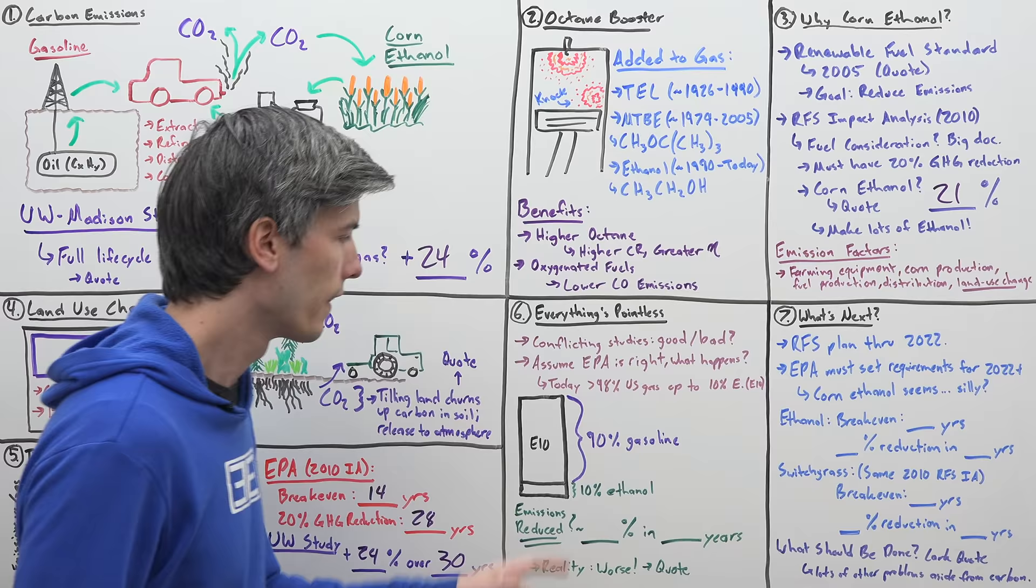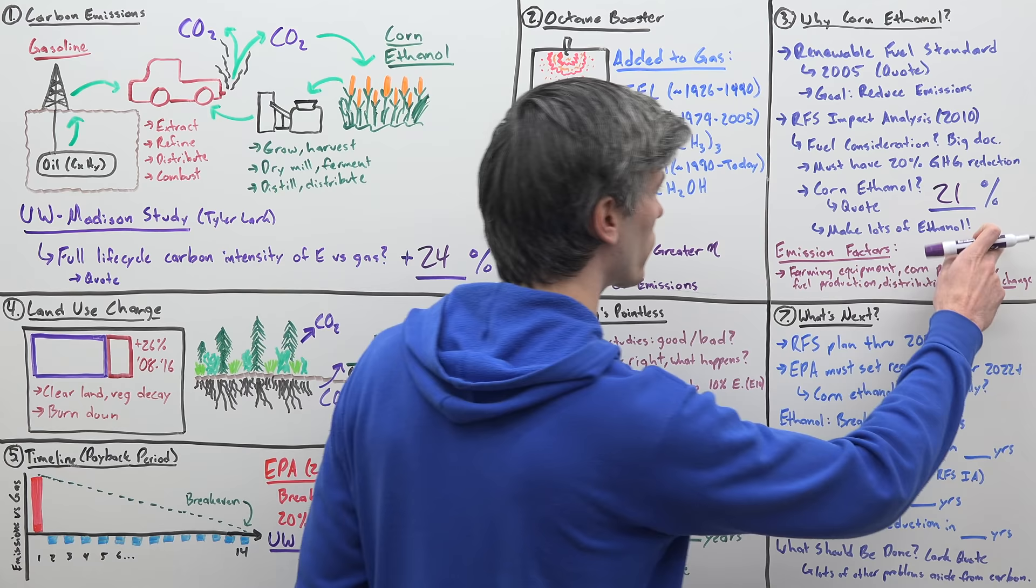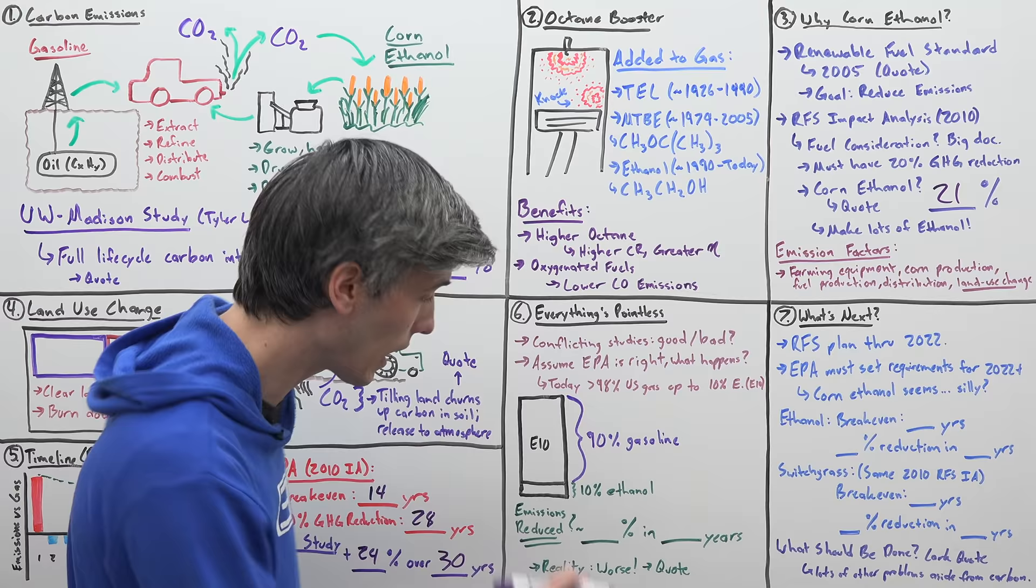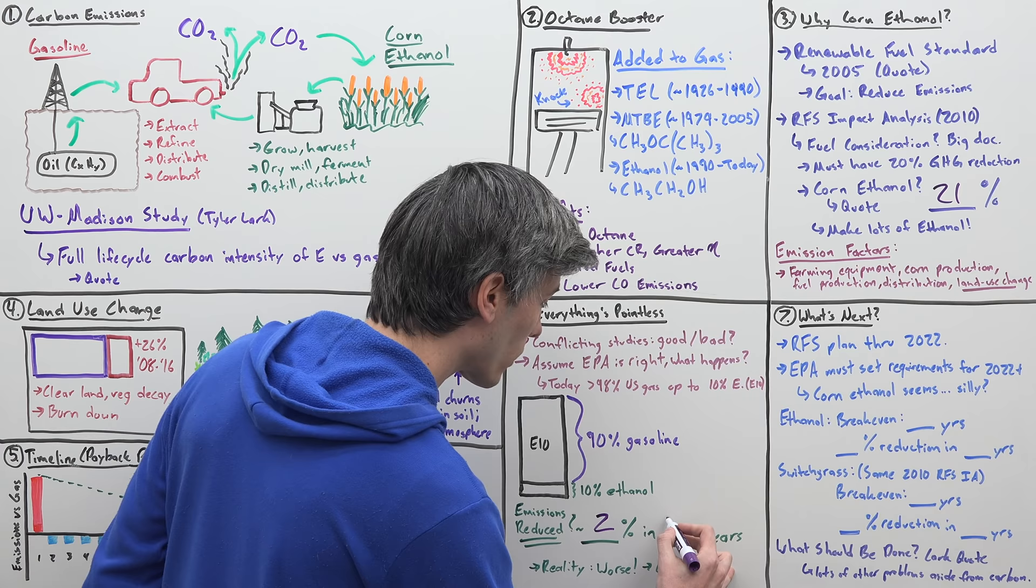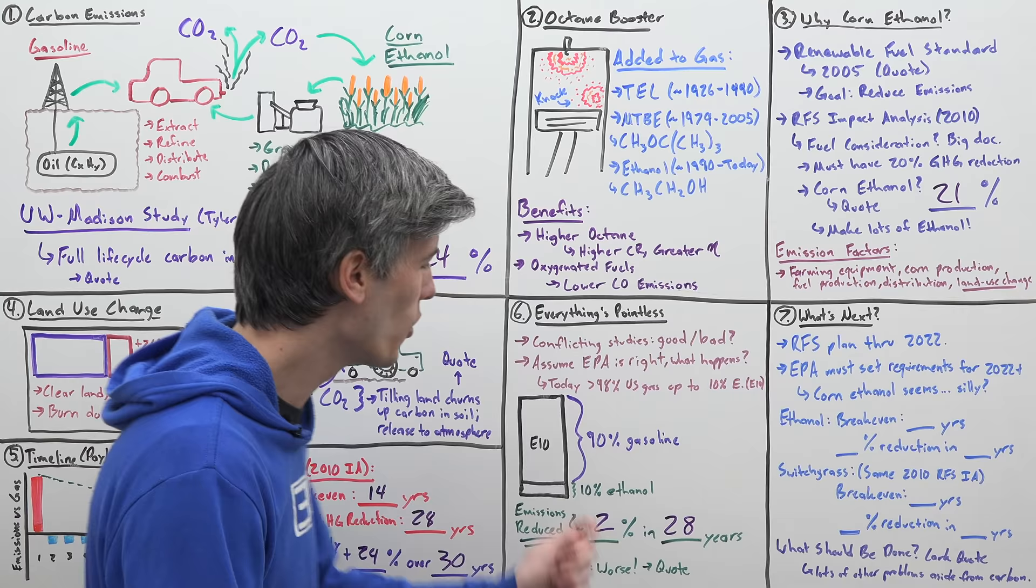That gasoline is 90% gasoline and it is 10% ethanol, which means if the EPA was correct and we had a 20% reduction in the emissions, of that 10% ethanol, well, then I had a 2% reduction in my emissions over the course of 28 years. And if that's what the result of all of this is, who cares?